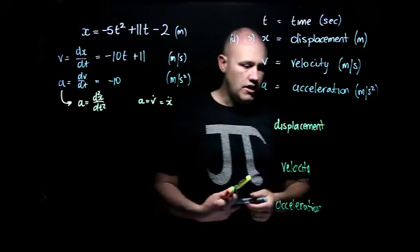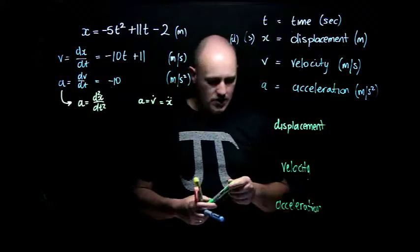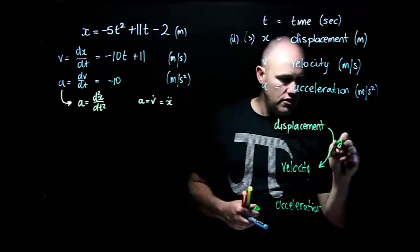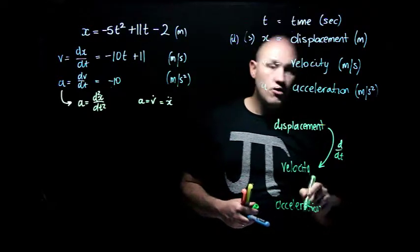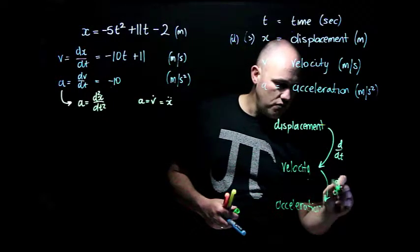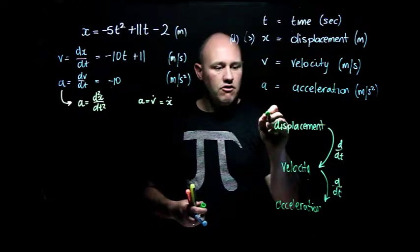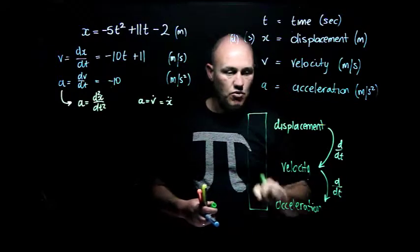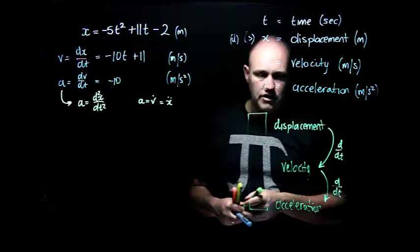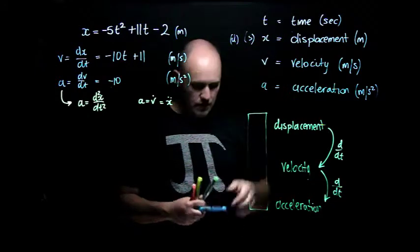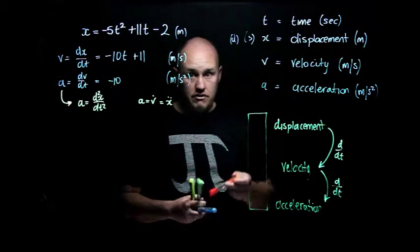Here's one little graphic down here. I've got displacement. If you want to go from displacement to velocity, you just have to derive with respect to time. If you want to go from velocity to acceleration, you just have to derive with respect to time. Now later on, when we do some anti-differentiation, you'll see that we can actually work backwards as well, but we don't need to worry about that for this video.